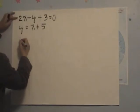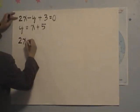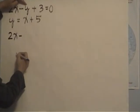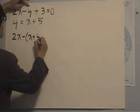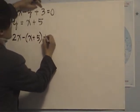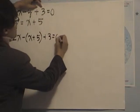Okay, first equation is 2x minus y, instead of this y, we will substitute x plus 5, plus 3 equals to 0.